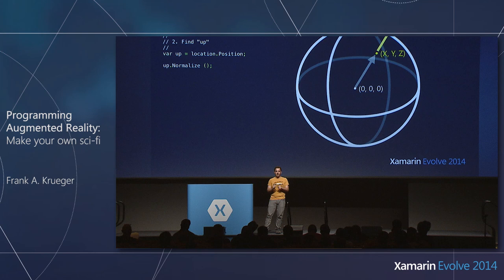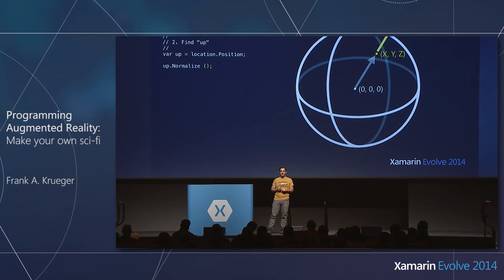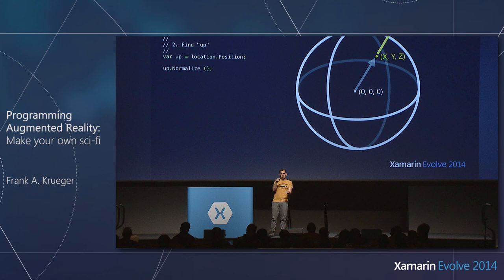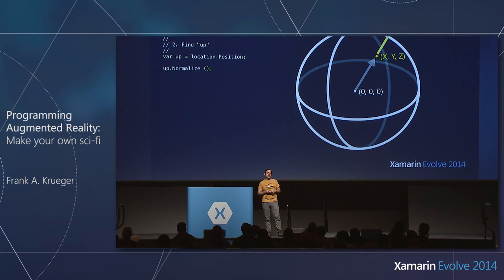Next we need to find our up vector — direction for knowing which way is up. Since the Earth is conveniently at the 0, 0, 0 coordinate, we simply take our position and subtract it from the Earth center — that's why there's no actual subtraction. Then we normalize it: normalization means we don't take into account its length, only its orientation. Up is pretty easy.